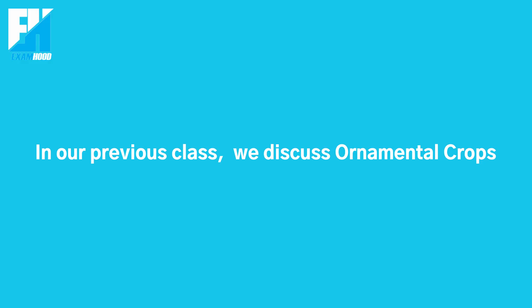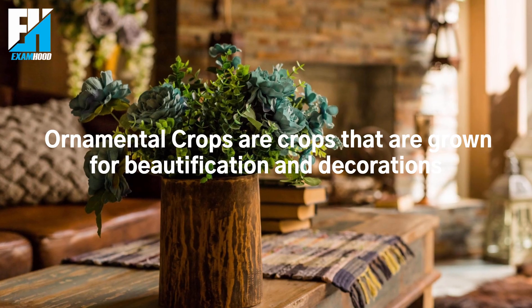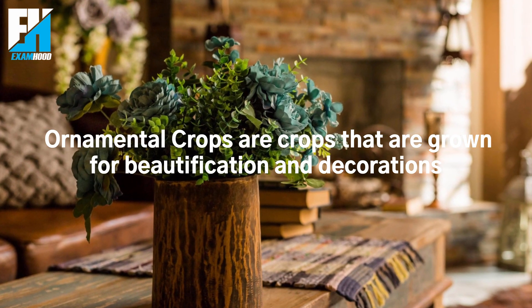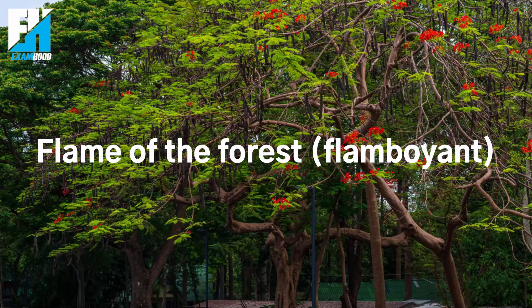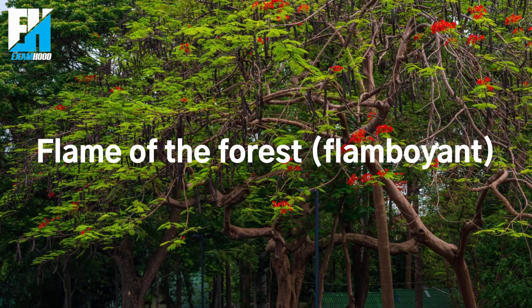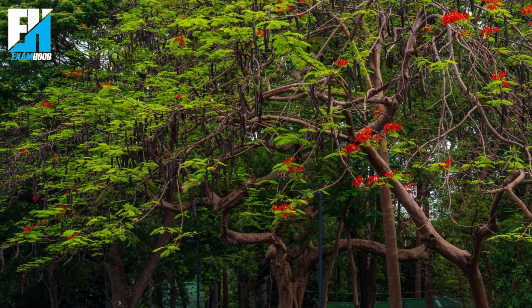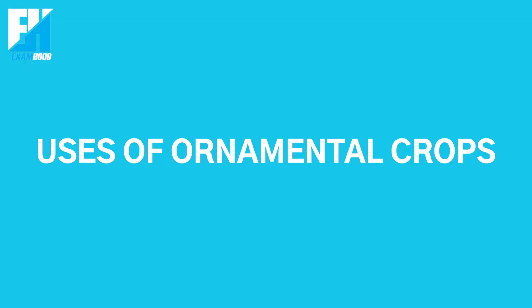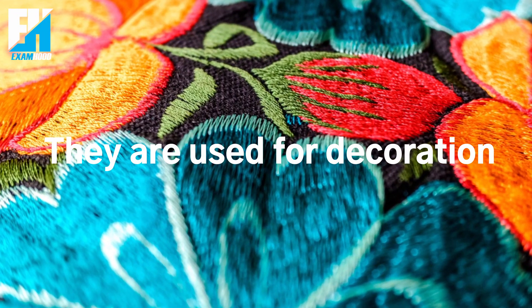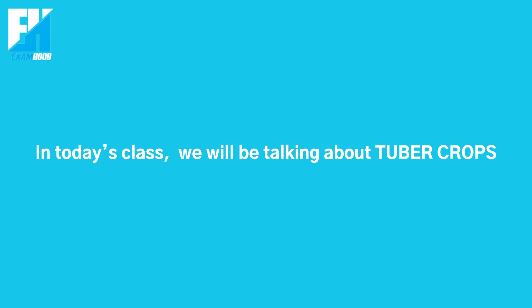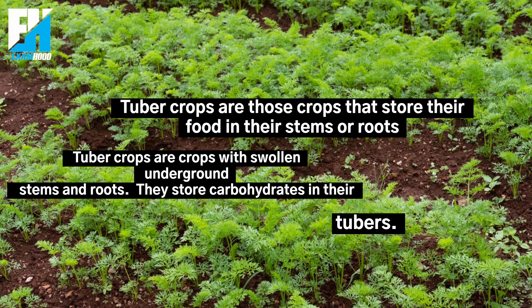In our previous class we discussed ornamental crops. Ornamental crops are crops that are grown for beautification and decoration. Examples of local ornamental crops include lawn grass, flame of the forest, and flamboyant. They are used for beautification and decoration. In today's class we will be talking about tuber crops.